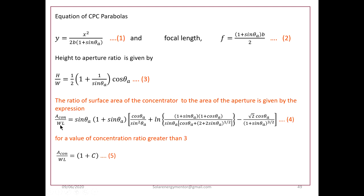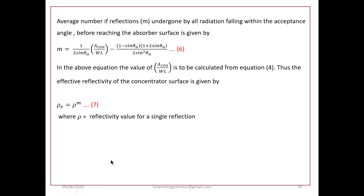For concentration ratios greater than 3, instead of using that large expression, a simpler expression can be used — but remember this is valid only for concentration ratios greater than 3. The simplified form is: A_con divided by W × n equals 1 plus C.